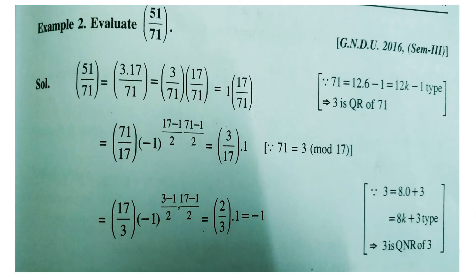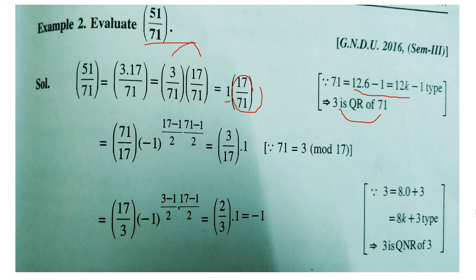Example: evaluate (51/71). Break 51 = 3 × 17, so (51/71) = (3/71)·(17/71). For (3/71): since 71 is of the form 12k−1, 3 is a quadratic residue of 71, so (3/71) = 1. For (17/71): reverse it using the reciprocity law to get (71/17); dividing 71 by 17 gives remainder 3, so we need (3/17). Applying reciprocity again gives (2/3), and since 3 is of the form 8k+3, 2 is a quadratic non-residue mod 3, giving −1.